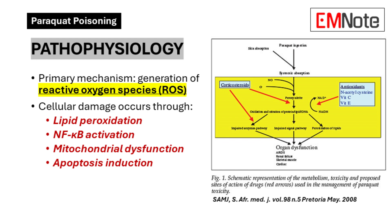Pathophysiology. The fundamental mechanism underlying paraquat toxicity centers on its capacity to generate reactive oxygen species. This oxidative stress cascade initiates multiple pathways of cellular injury, including peroxidation of lipid membranes, compromising cellular integrity, and activation of the NF-kappa-B pathway, triggering pro-inflammatory cascades.